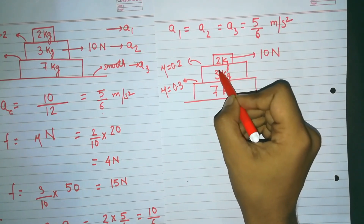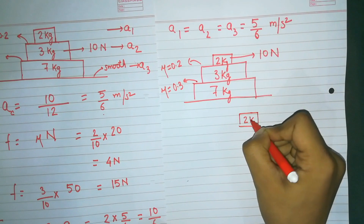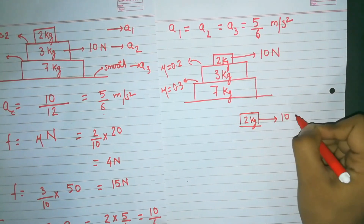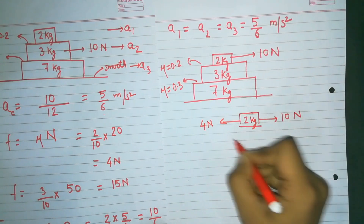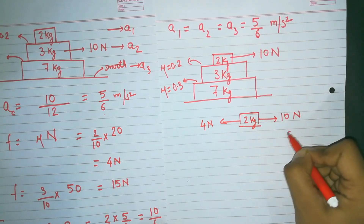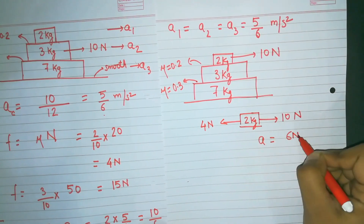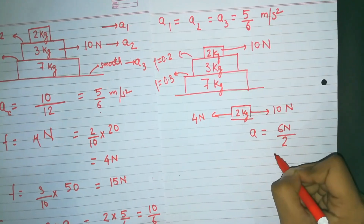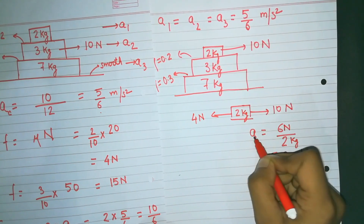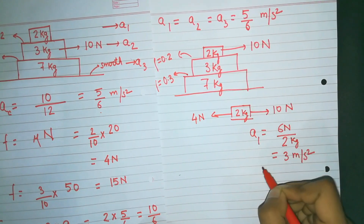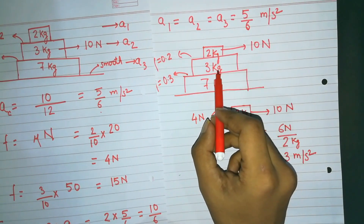Drawing the free body diagram: 10 newtons acts in the right direction on the 2kg block, and 4 newtons of kinetic friction acts in the opposite direction. The net force is 10 − 4 = 6 newtons. Therefore, acceleration A1 = net force / mass = 6 / 2 = 3 meters per second squared.